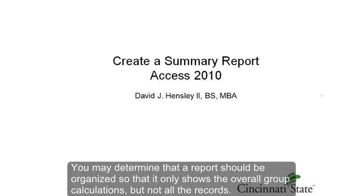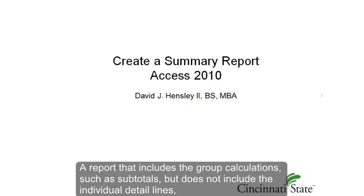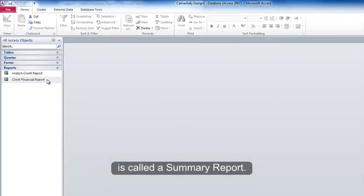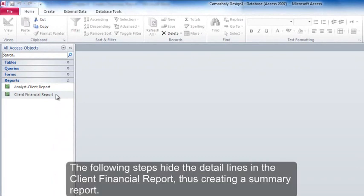You may determine that a report should be organized so that it only shows the overall group calculations but not all the records. A report that includes the group calculations such as subtotals but does not include the individual detail lines is called a summary report. The following steps hide the detail lines in the client financial report, thus creating a summary report.